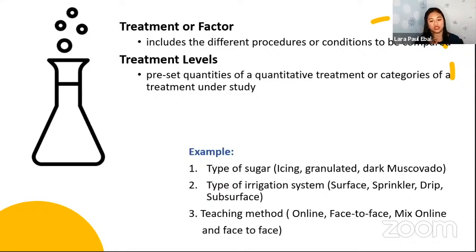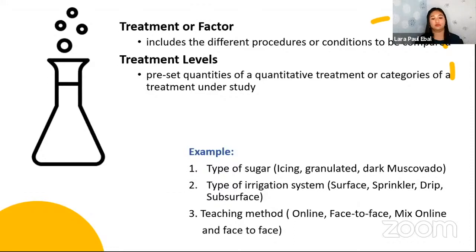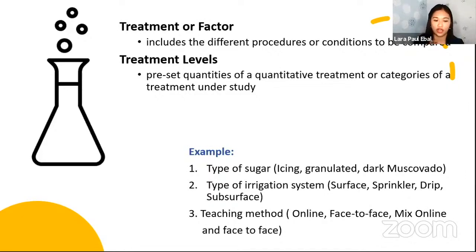Another example is type of irrigation — surface, sprinkler, drip, and subsurface — where you compare them by applying each to rice and measuring the yield. Another example is teaching method: comparing online, face-to-face, and mixed online in terms of students' math scores. These are just examples; the levels depend on your specific research.